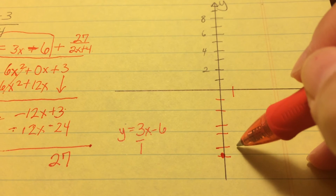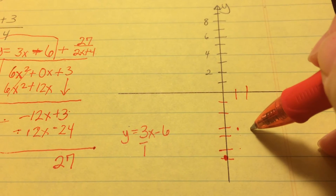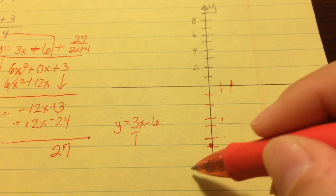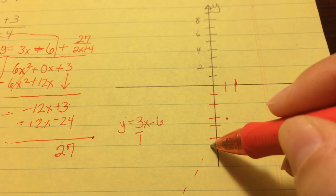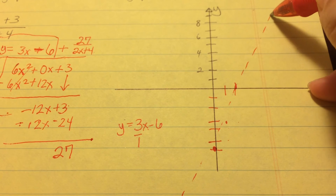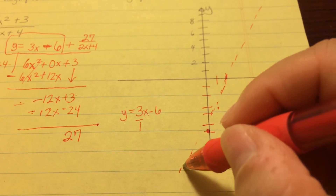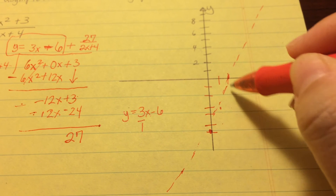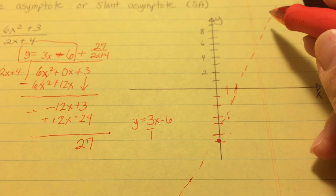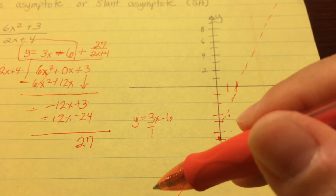We can verify by substituting values: x equals 0 gives negative 6, x equals 1 gives 3 minus 6 equals negative 3, and x equals 2 gives 6 minus 6 equals 0. The slant asymptote is drawn as a dotted line. Similar to the horizontal asymptote, the graph can cross in some parts but eventually rides really close without crossing as it goes to infinity.